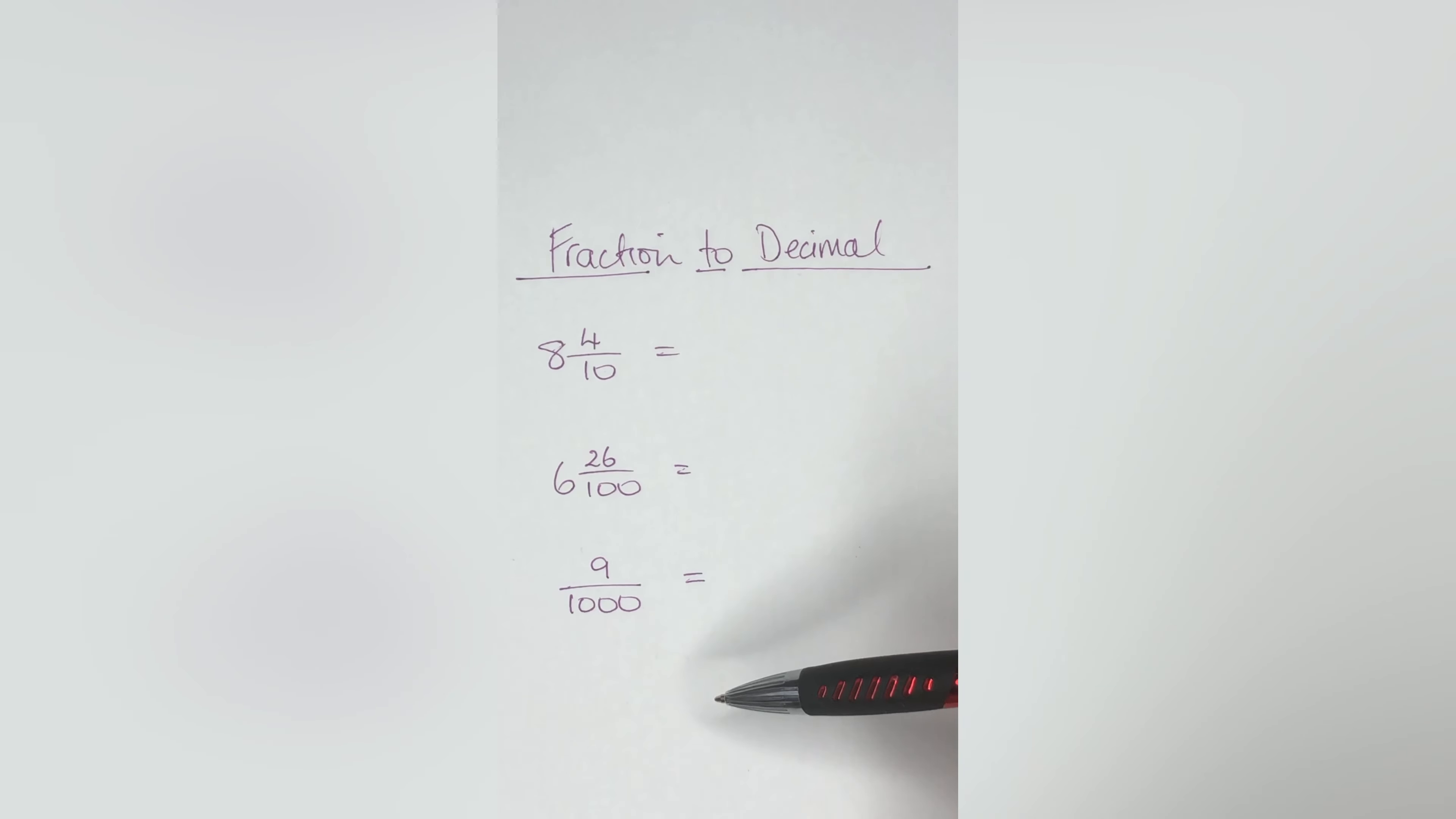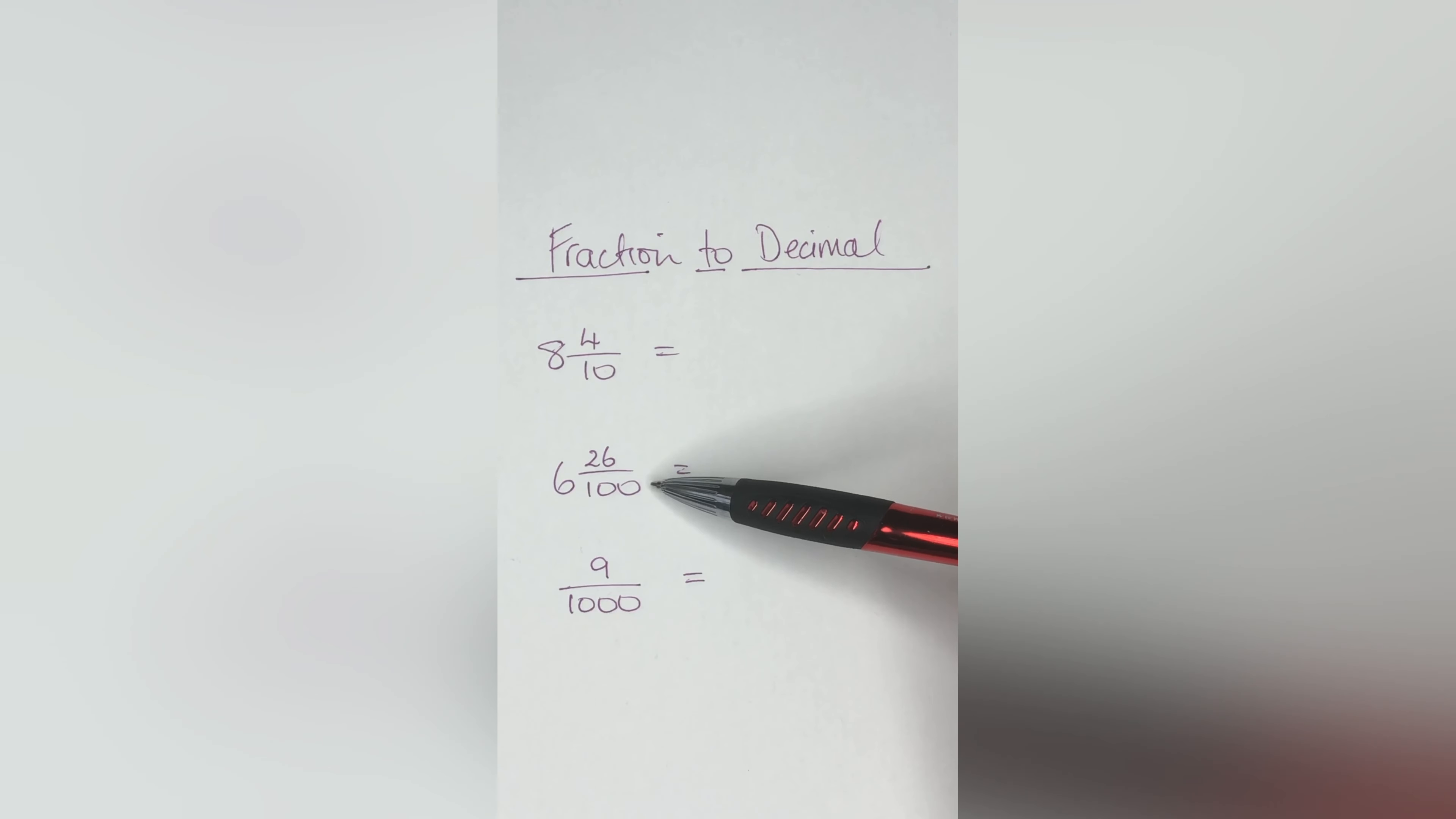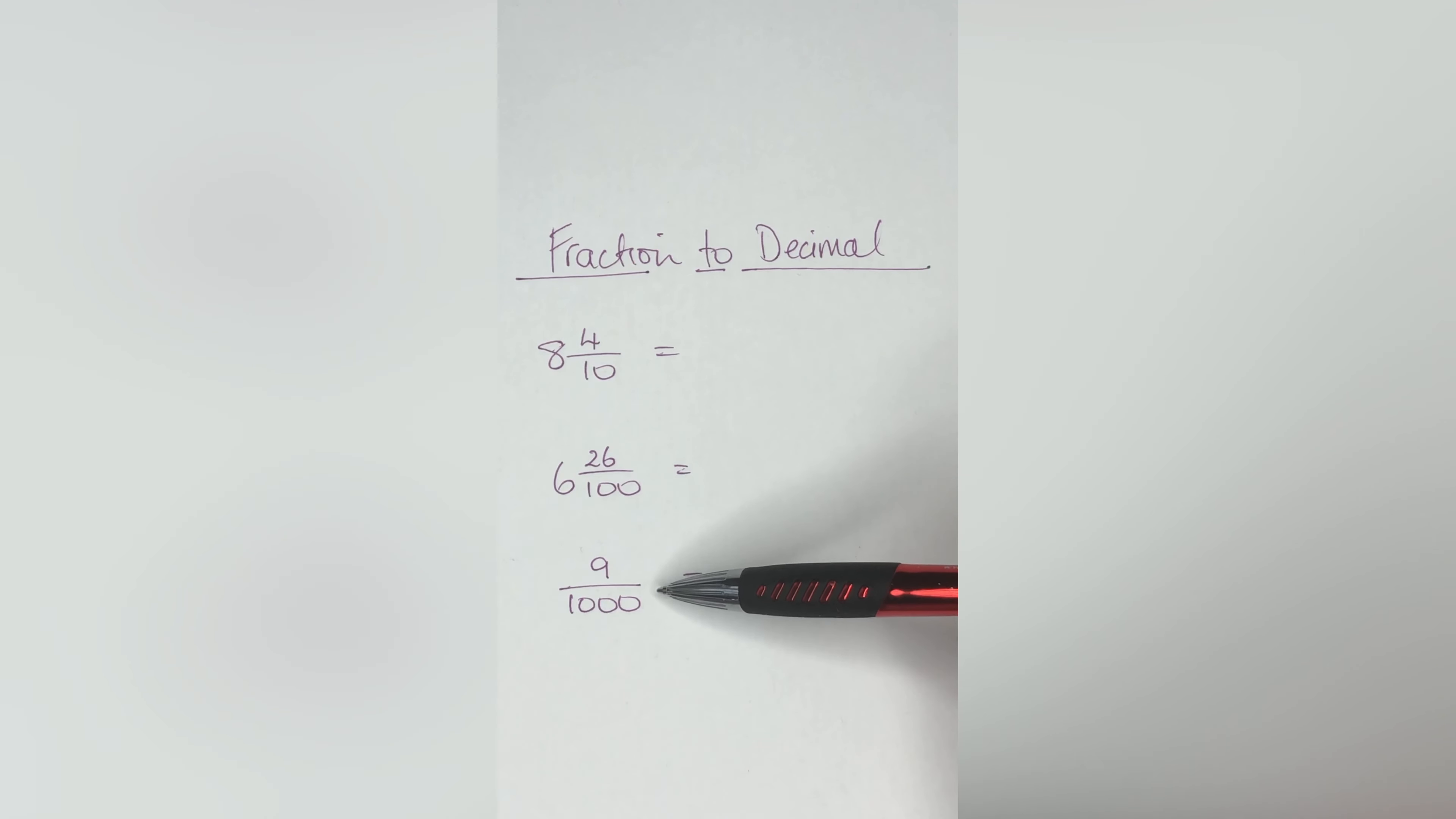As you can see from the title, we're doing fraction to decimal. How do we convert this? Let's have a look. Here I've set up three questions for you. We have eight and four tenths, six and twenty-six hundredths, and nine thousandths.